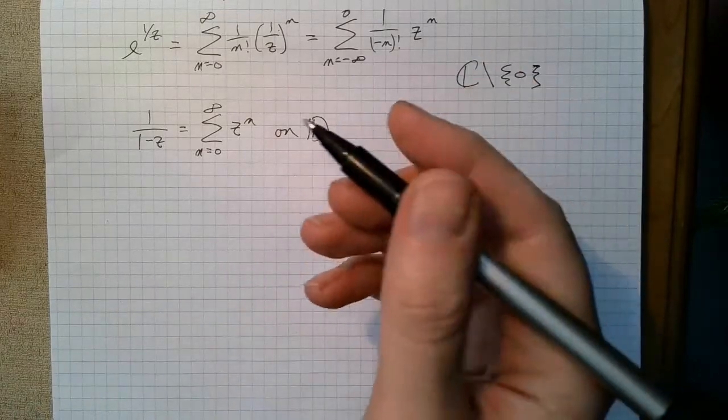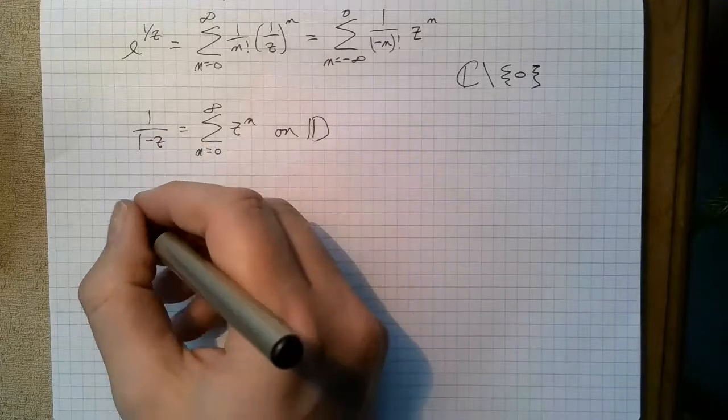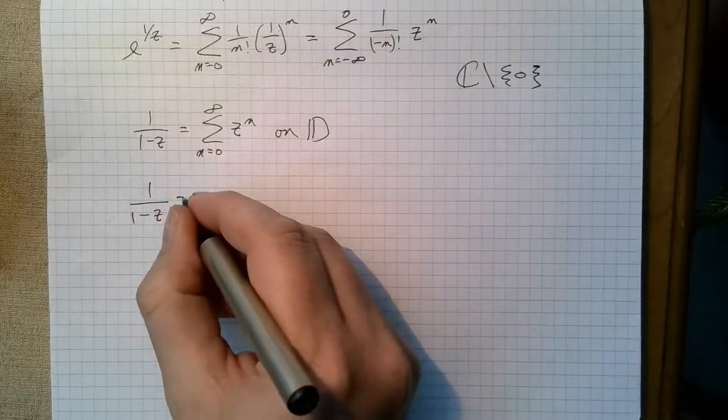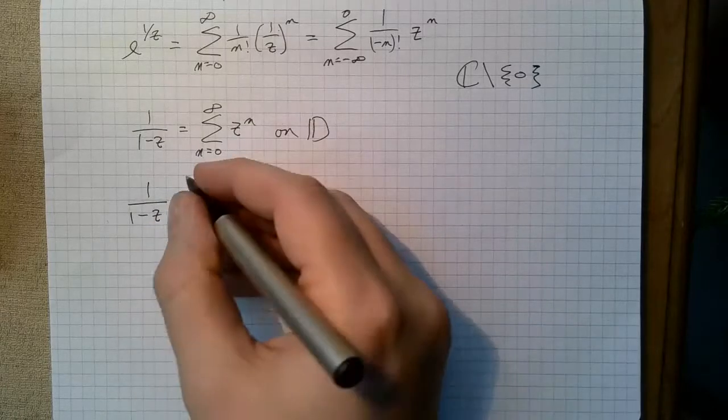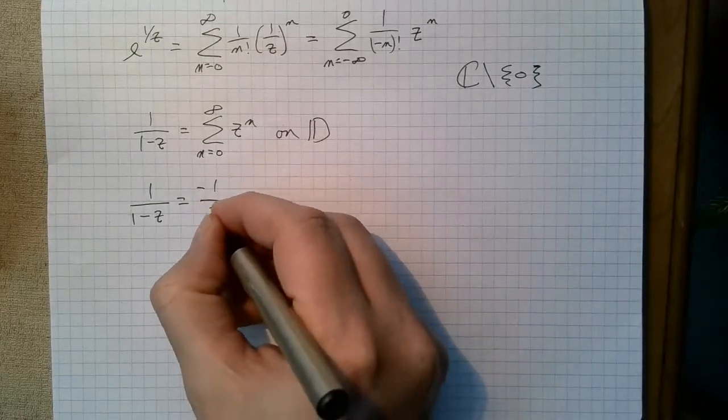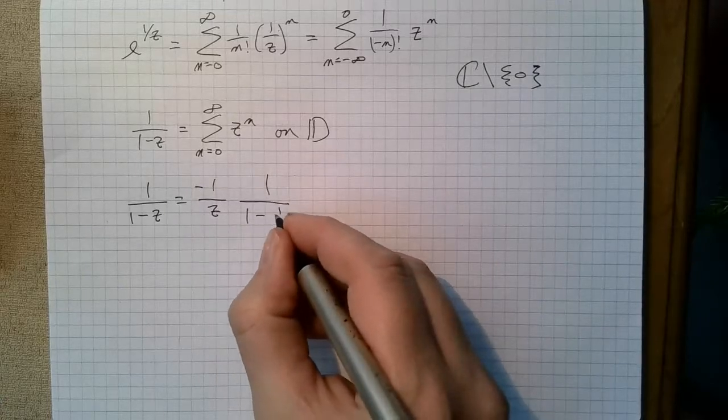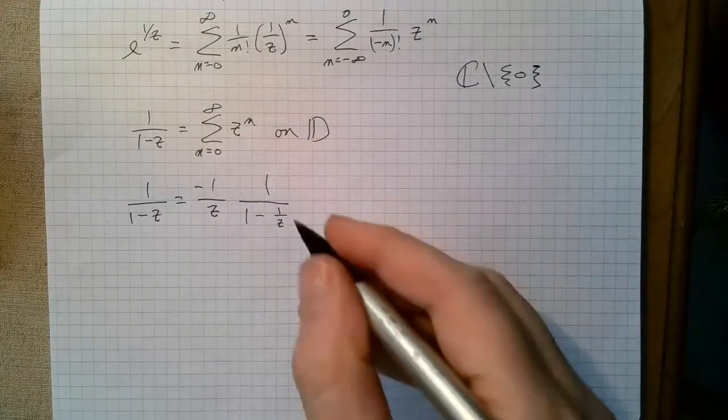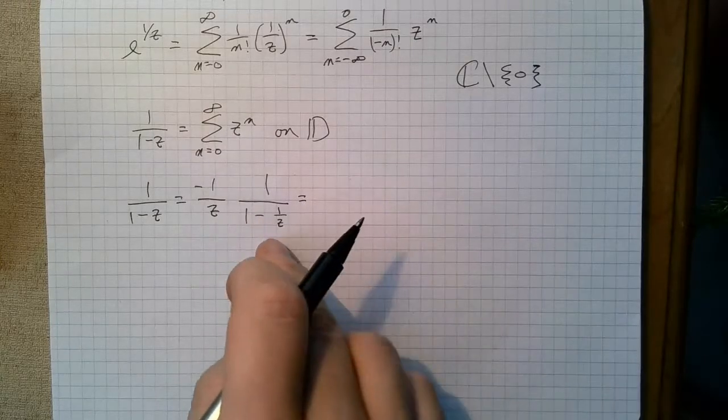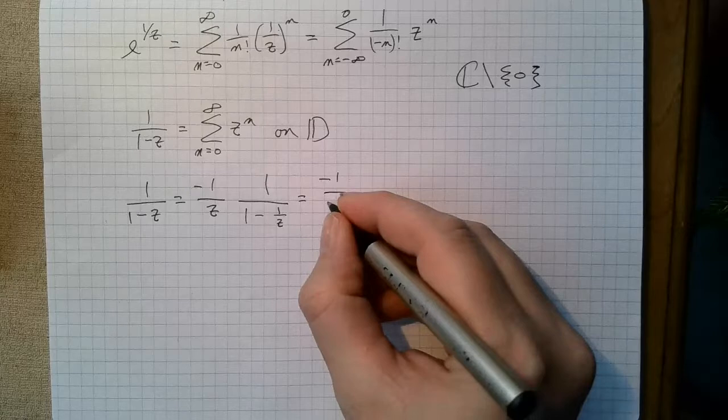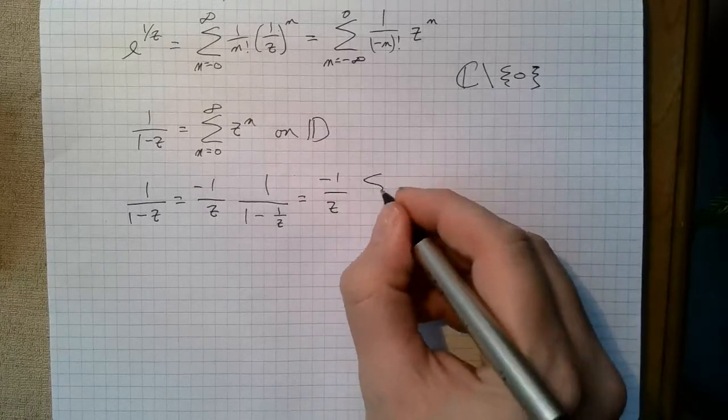And I could similarly rewrite this. I can start with 1 over 1 minus z, and if I do a little bit of algebra and write it like this, I could use again the geometric series over here, but it's 1 minus z, and use the geometric series on here.